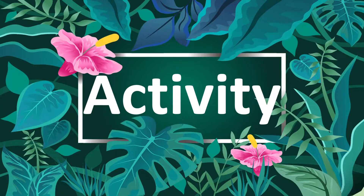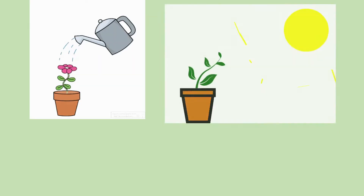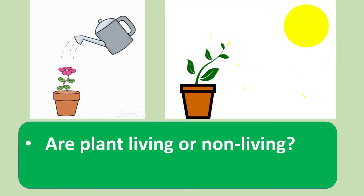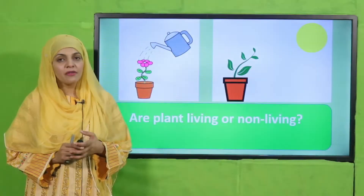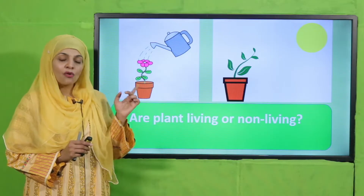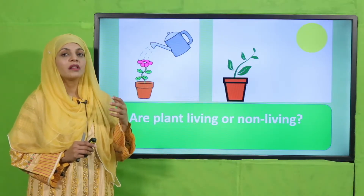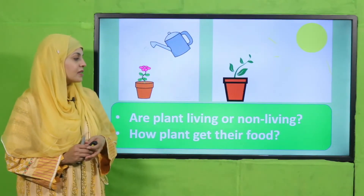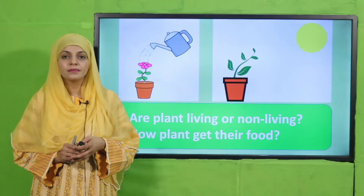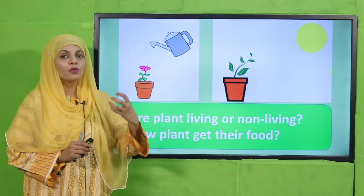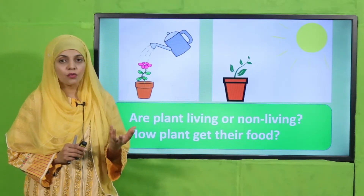Let's start the lecture with an activity. Here you can see pictures — quickly tell me, are plants living or non-living? Very good, they are living because they grow, they need water, they breathe. So they are living things. How do plants get their food? Plants do not get their food from somewhere — they make their own food.